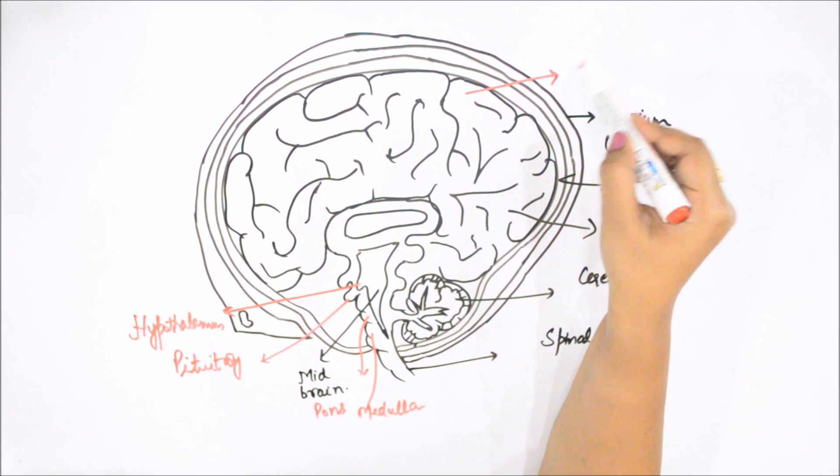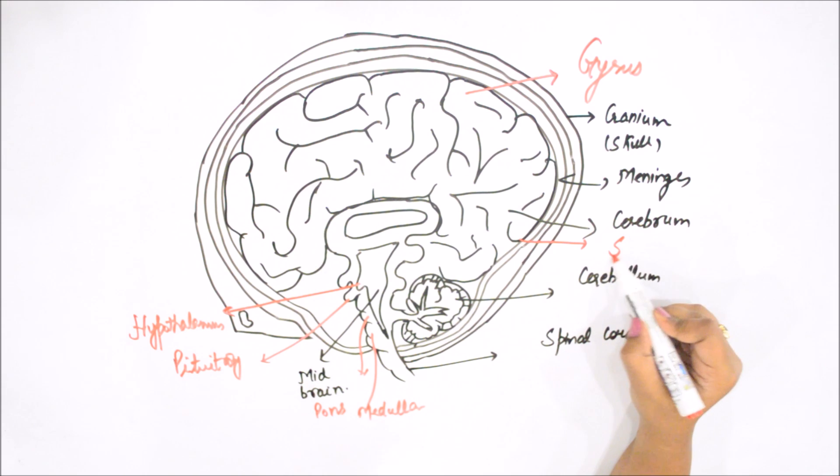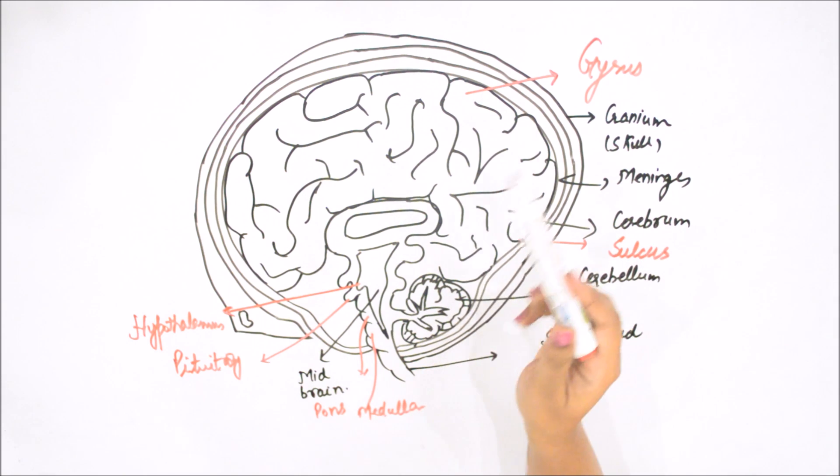This is your gyrus. Gyrus means folds of cerebrum. And will have various depressions called as sulcus in cerebrum. These are gyrus and sulcus. And these are the various parts of midbrain and hindbrain. This is your brain, the main thinking part of your body.